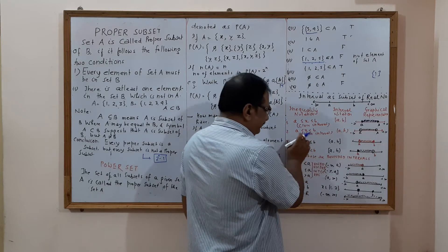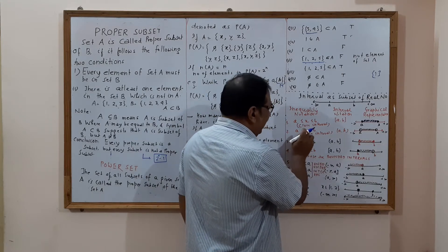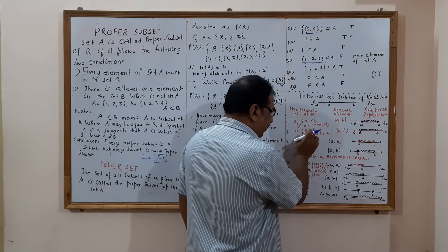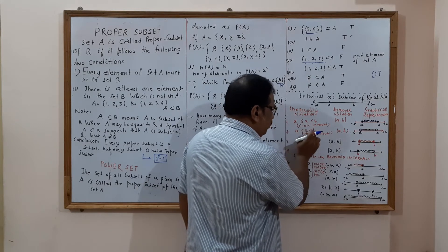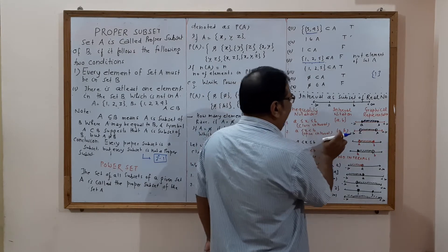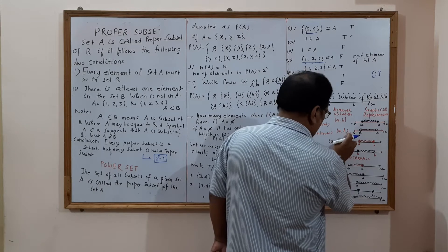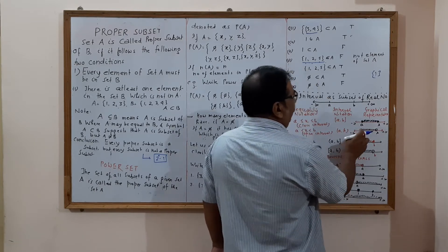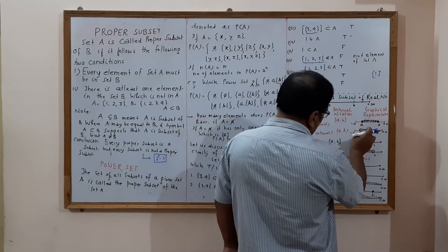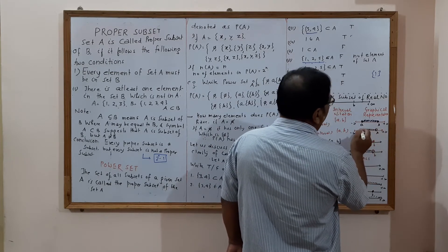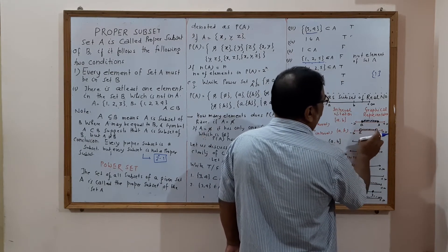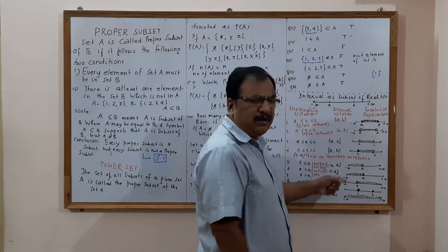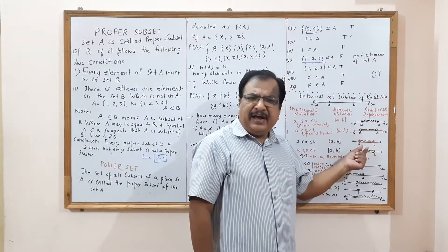The second type is an open interval. Here X lies between A and B, exclusive of both A and B. It is written as (A, B) with parentheses on both sides. On the number line, we make hollow circles over A and B. Hollow circle means A and B are excluded.